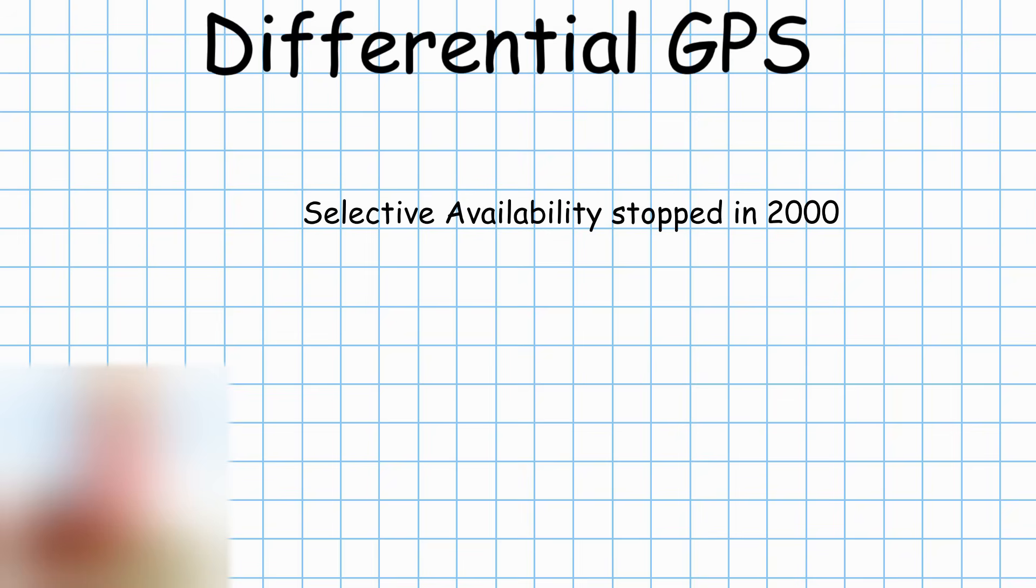Today, even though selective availability is no longer an issue, DGPS is still used to provide corrections to GPS signals and increase its overall accuracy.